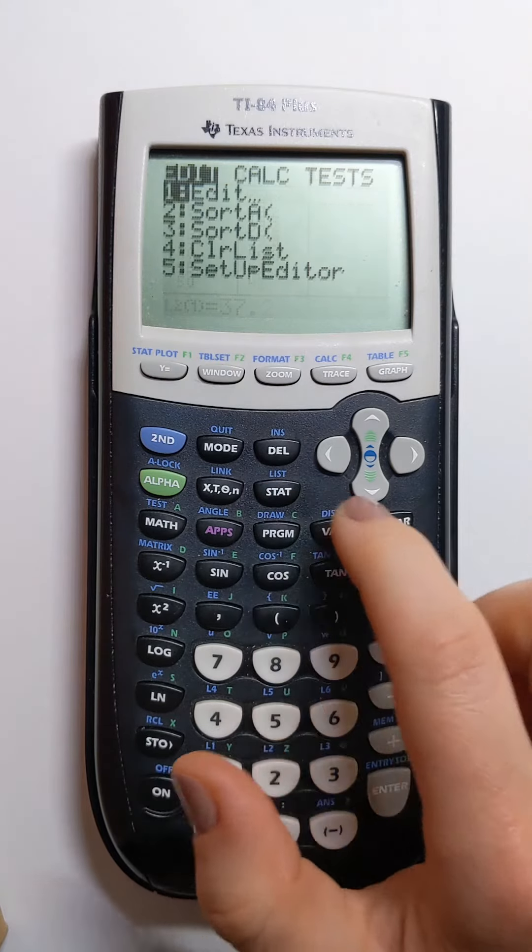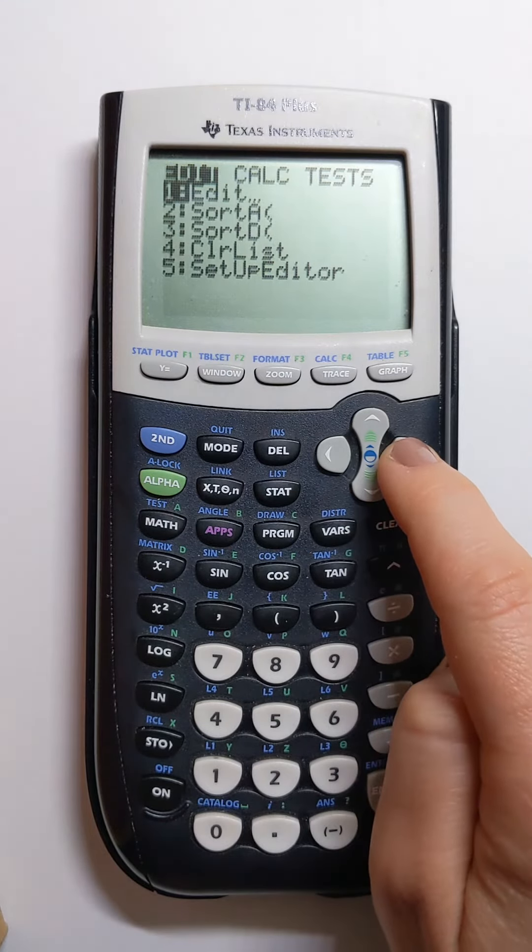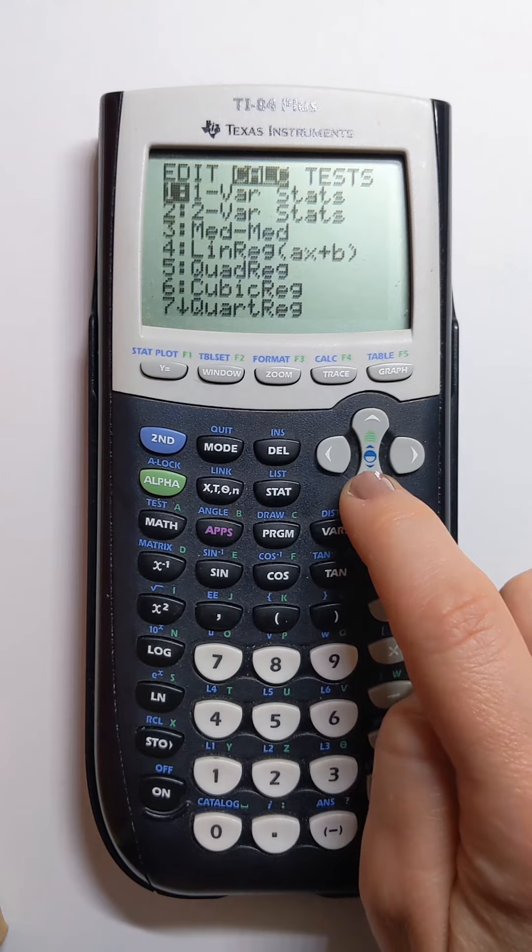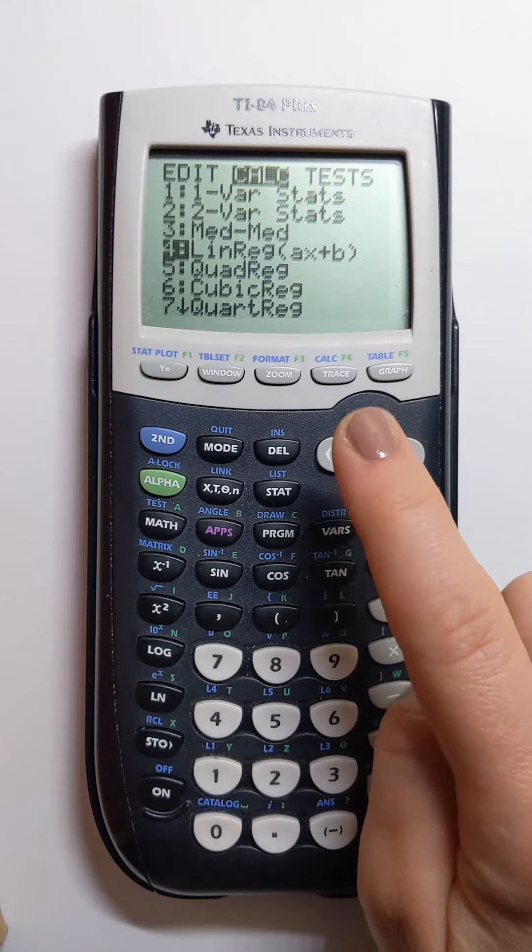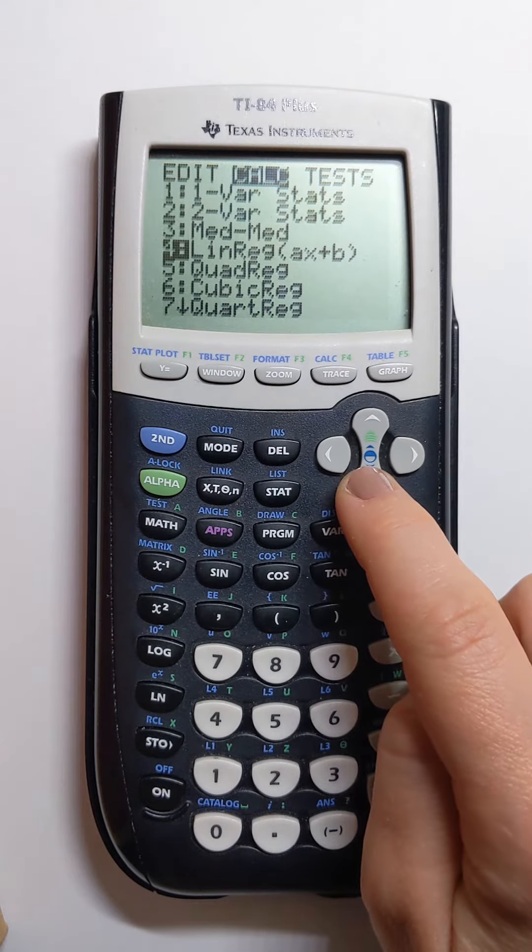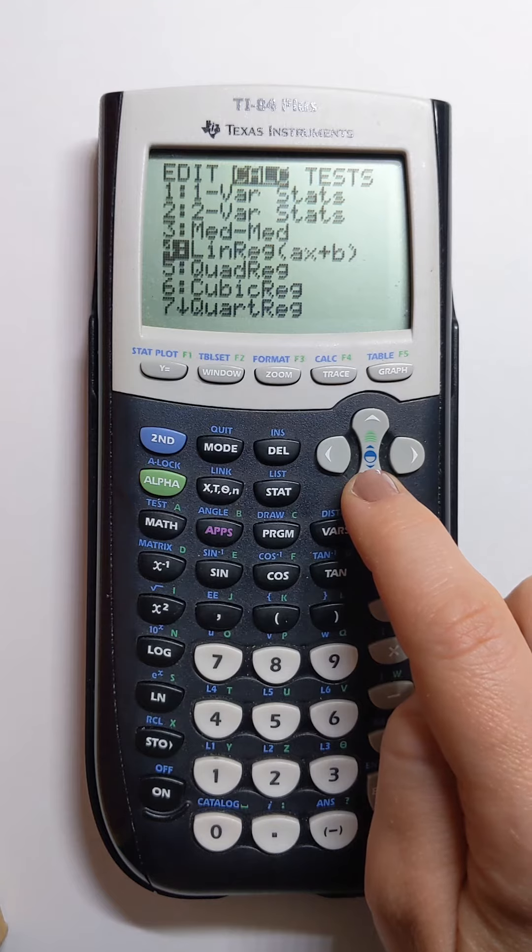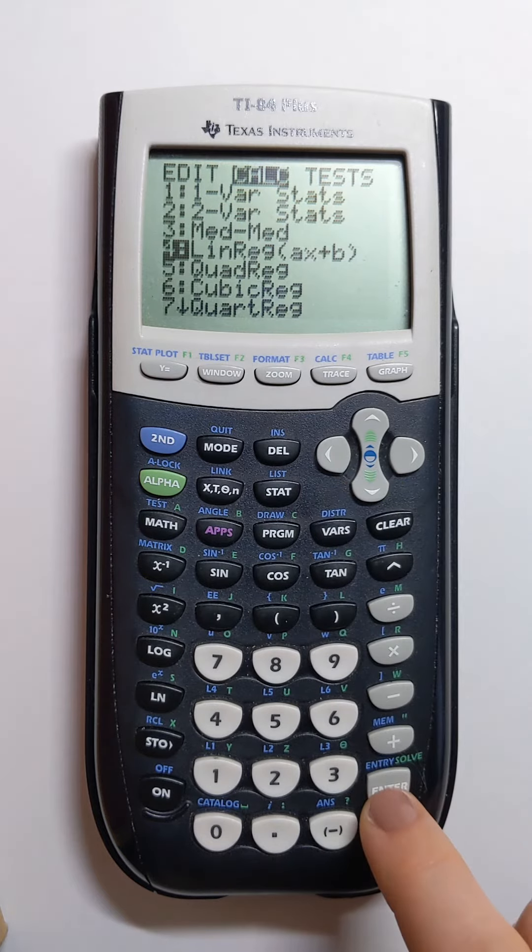I'm going to press on STAT again, switch to calc tab and then go down to line number four. Now that line or the name of the menu item might start making sense. It says LinReg, which stands for linear regression, and that's where we're going to find the equation.